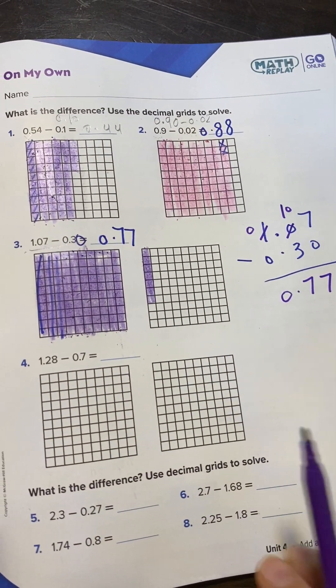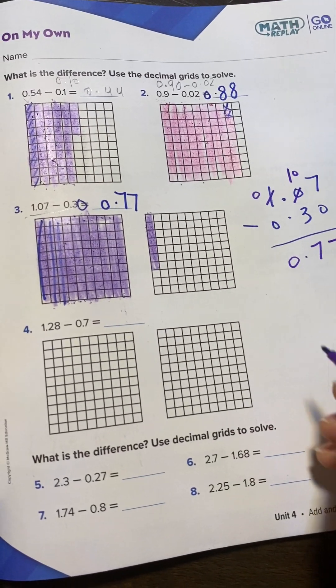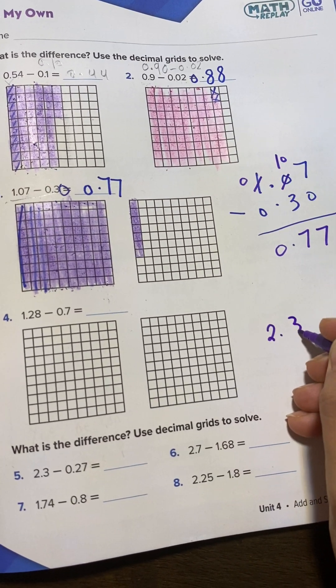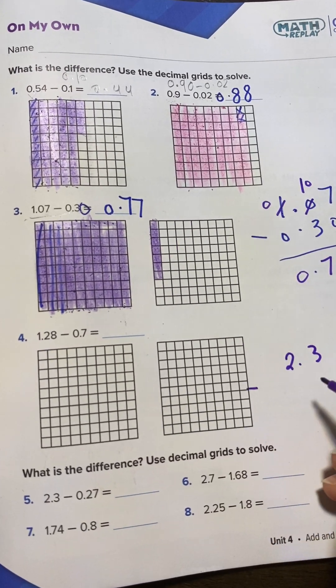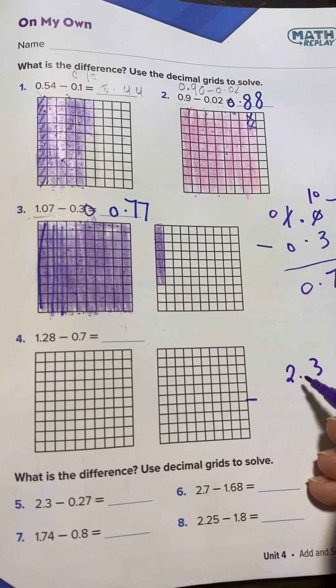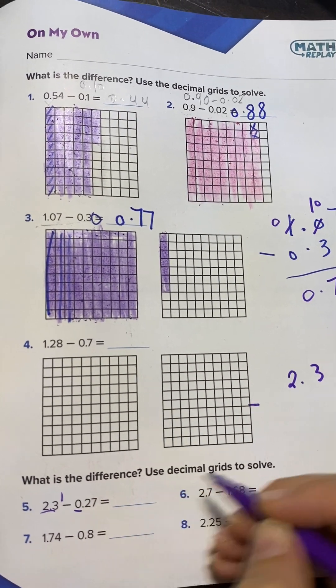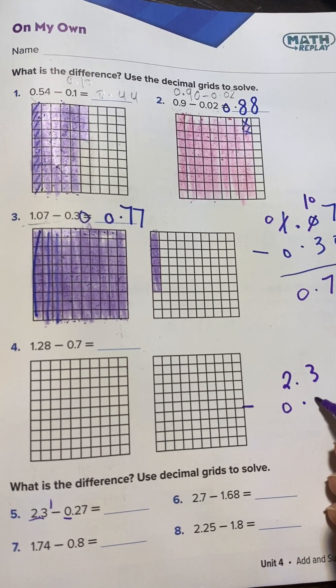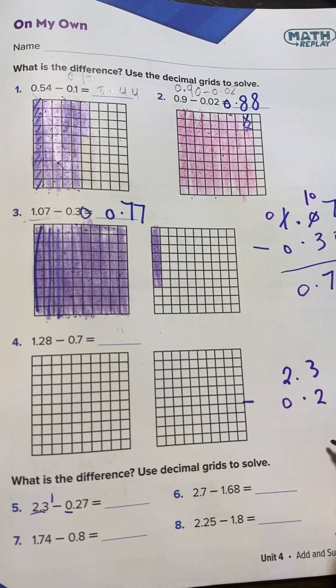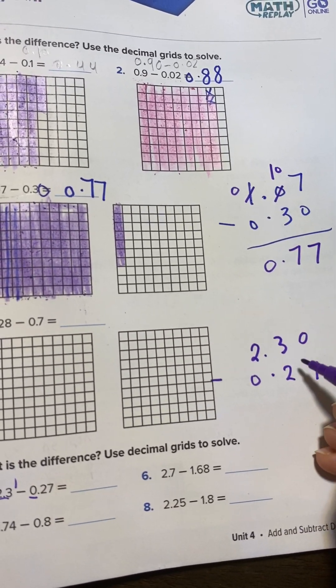2.3 minus 0.27. Here we have 2 in the ones place. Here we have 0, so 0 is under 2. Decimal under decimal. 27. If the 3 doesn't have any number after it, we write 0. Now we subtract: 0 minus 7, can we do it? No, so we have to borrow.